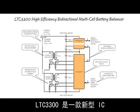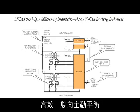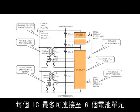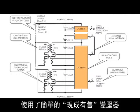The LTC3300 is a new IC for high efficiency, bi-directional active balancing of series connected lithium ion or lithium iron phosphate battery stacks. Each IC interfaces to up to six battery cells. The architecture employed is a synchronous flyback topology employing simple off-the-shelf transformers.